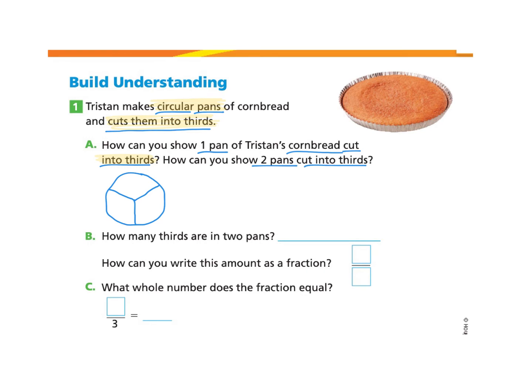That separates the circle into three equal parts. They ask me to show two pans cut into thirds, so I'm going to do the exact same thing I did for the first pan — again, making a Y — and that will create two pans that are cut into thirds.